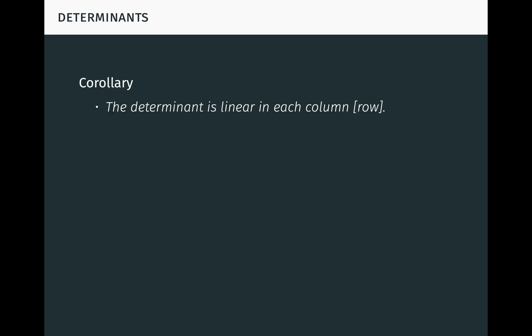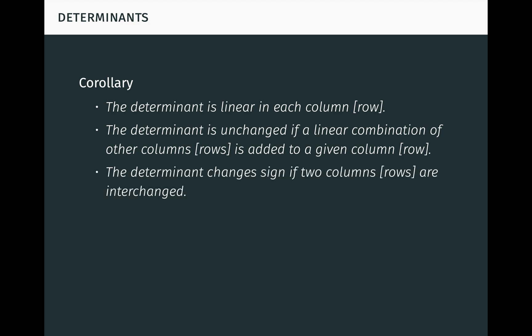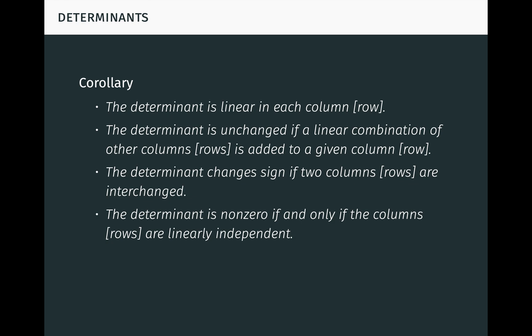For example, the determinant is linear in each column and row. The determinant is unchanged if a linear combination of other columns is added to a given column, and similarly for rows. The determinant changes sign if two columns or rows are interchanged. And the determinant is non-zero if and only if the columns and rows are linearly independent. In particular, the determinant is zero whenever a single column or row consists entirely of zeros, and whenever two columns or rows are equal. These properties are useful computationally — one strategy to compute a determinant is to reduce it through row and column operations into a form that's easier to compute.